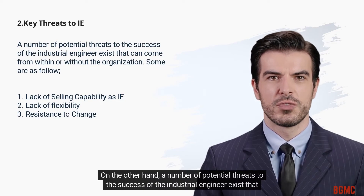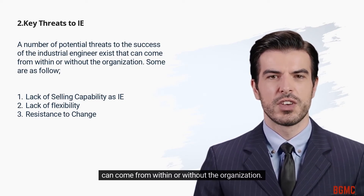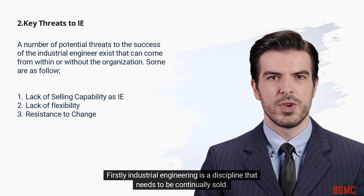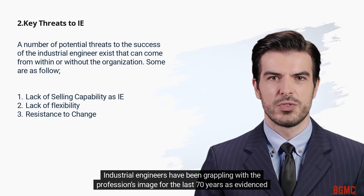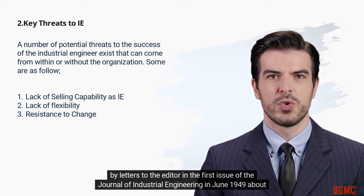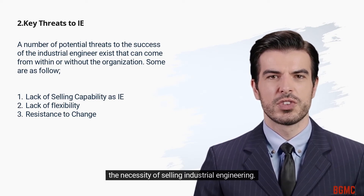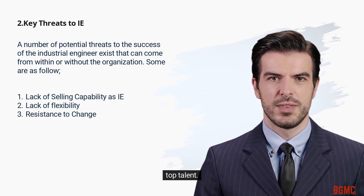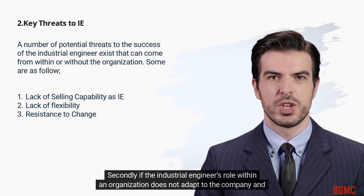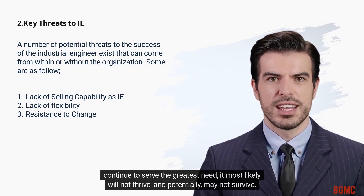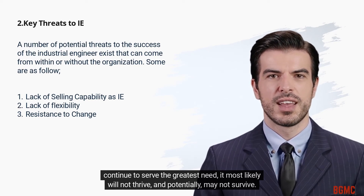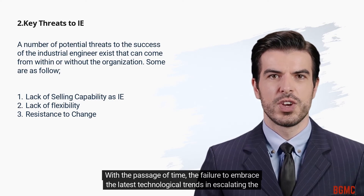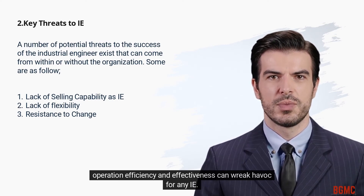On the other hand, a number of potential threats to the success of the industrial engineer exist that can come from within or without the organization. Firstly, industrial engineering is a discipline that needs to be continually sold. Industrial engineers have been grappling with the profession's image for the last 70 years, as evidenced by letters to the editor in the first issue of the Journal of Industrial Engineering in June 1949 about the necessity of selling industrial engineering. Within their organizations, industrial engineers need to establish a reputation for recruiting and developing top talent. Secondly, if the industrial engineer's role within an organization does not adapt to the company and continue to serve the greatest need, it most likely will not thrive and potentially may not survive. Thirdly, many IE tools are being used under different professional designations. With the passage of time, the failure to embrace the latest technological trends in escalating operational efficiency and effectiveness can wreak havoc for any IE.